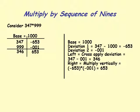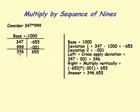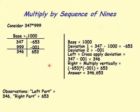The base is 1000, which has three zeros, so the right part has three digits, all positive. The answer is 346,653 — 346 as the left part and 653 as the right part.